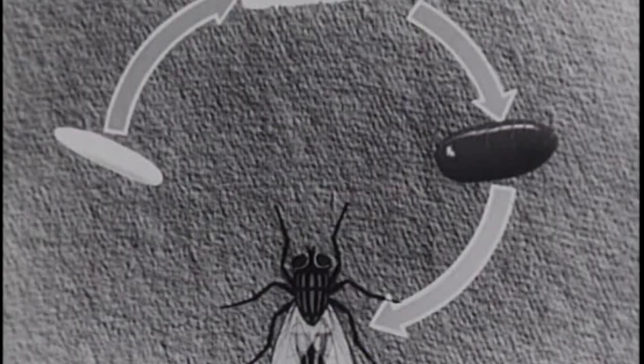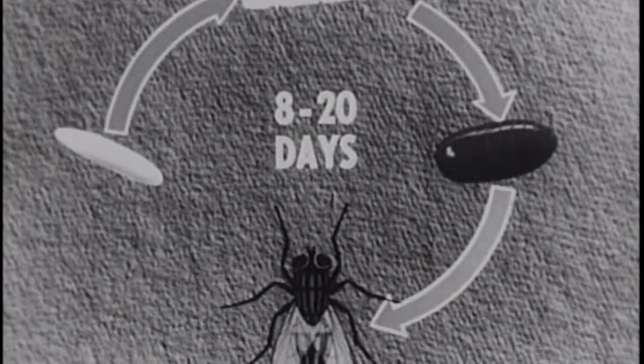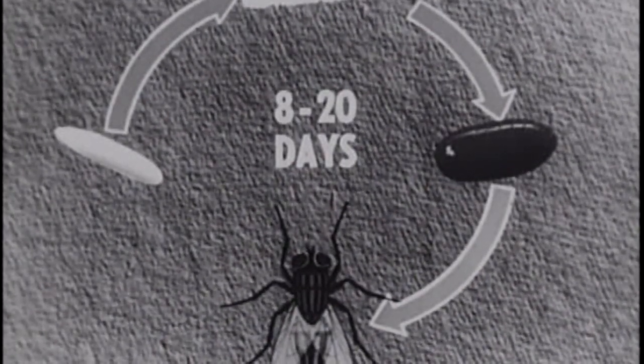The total period from egg to adult is 8 to 20 days, and there may be 15 generations a year.